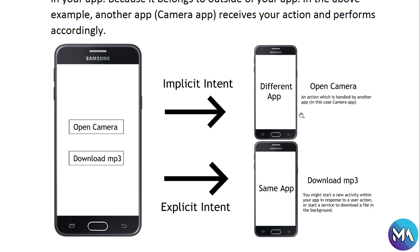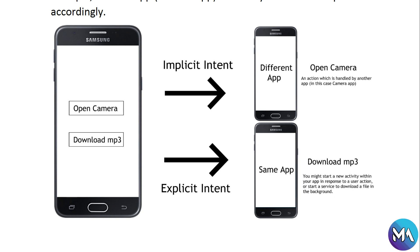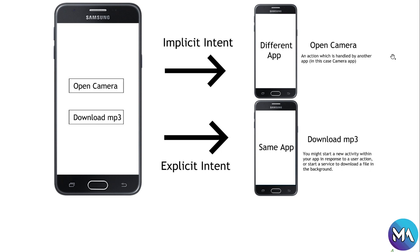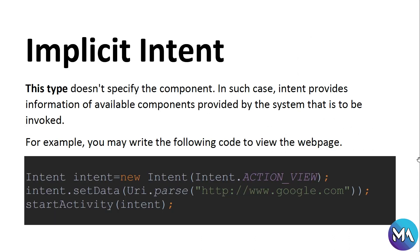Open camera will make an implicit intent because the action is handled by a different app — the camera app, which is found in the Android system. So open camera goes to implicit intents. Download MP3, on the other hand, is explicit intents — within the same app you may start a new activity in response to the user action. Implicit intents take you to a different app; explicit intents keep you in the same app.